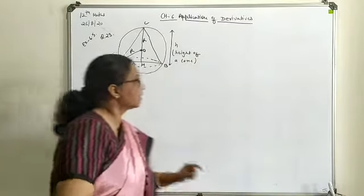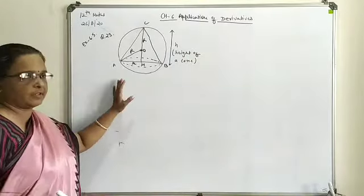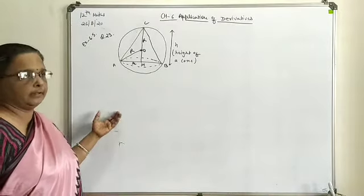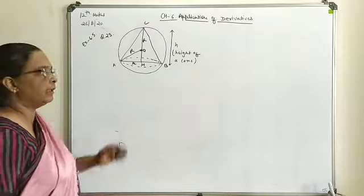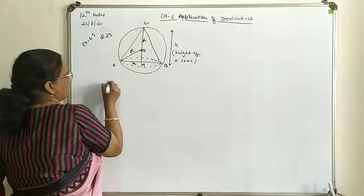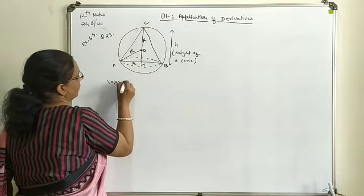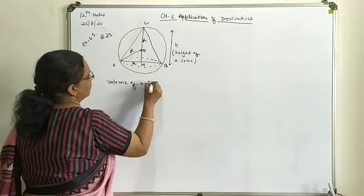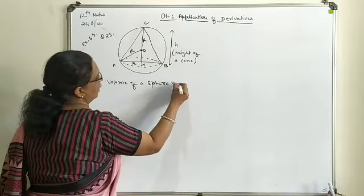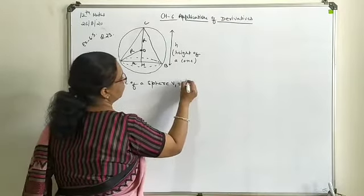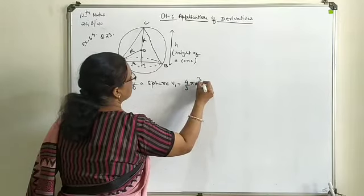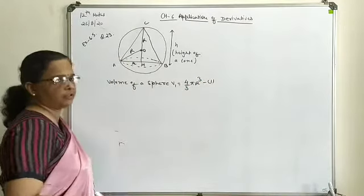First we write the volume of the sphere, then we discuss the volume of the cone, and finally we link them with each other. Volume of sphere V1 = (4/3)πR³. This is marked as equation one.